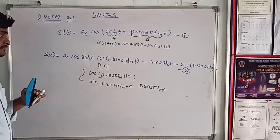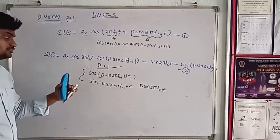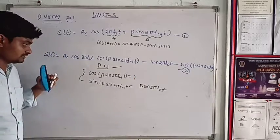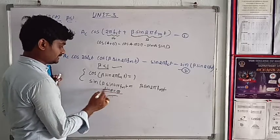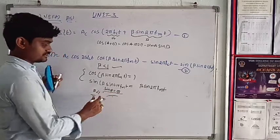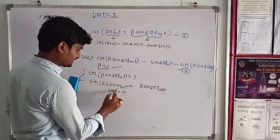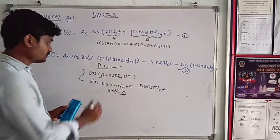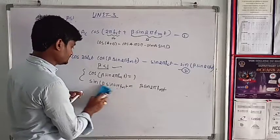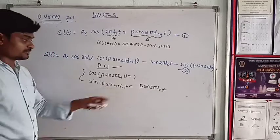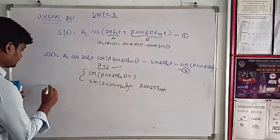So now, beta less than 1, so cos theta nearly equal to 1 and sin theta equal to theta. So cos theta equal to 1 and sin beta sin 2 pi FM t equal to beta sin 2 pi FM t.